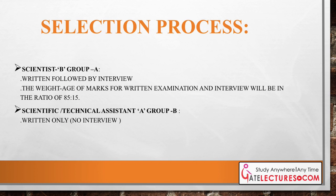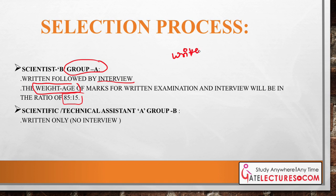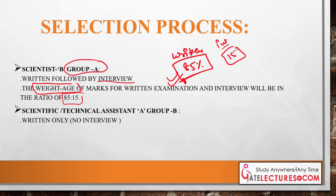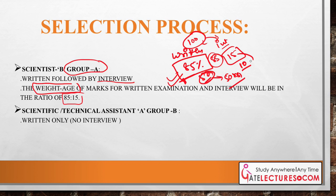For the NIELIT Scientist B Group A selection process, there will be a written examination followed by an interview. The weightage ratio for written examination to interview is 85:15. This means whatever marks you score in the written examination carry 85% weightage, while the interview carries 15% weightage toward the final score. It is important to score as high as possible in the written examination given its dominant weightage.